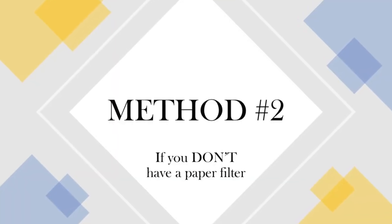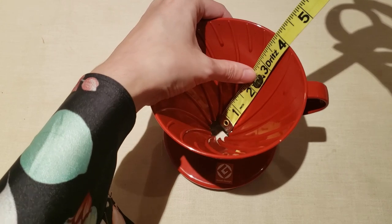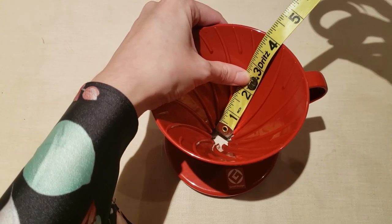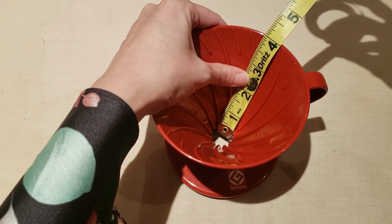If you don't have a paper filter at hand to copy, you can take some measurements of your coffee dripper cone and use the measurements to create a template. Using a measuring tape, measure from the top edge of your cone to the bottom opening. Mine is 4 inches.